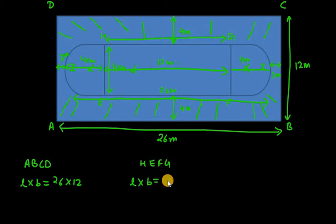So now we know the length and breadth of HEFG. Length and breadth. Length is 12. This is 12. And breadth is 4. So now we have area of HEFG as well.